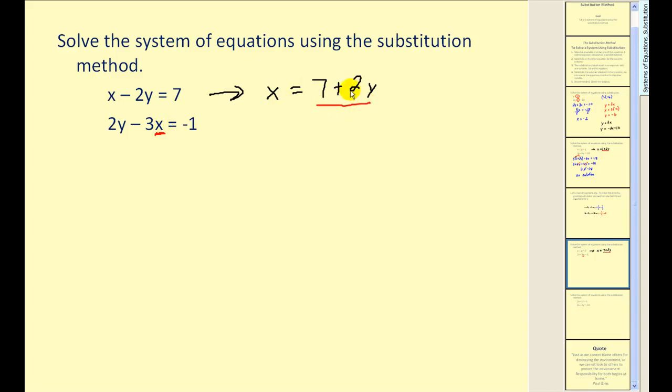So since x equals 7 plus 2y, we can replace this x with that expression, which would result in an equation with just y's. And that's the whole point, to obtain an equation with one variable. Now be careful here. We have to think of distributing a negative 3.